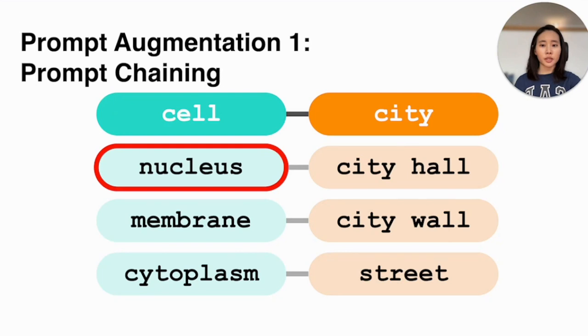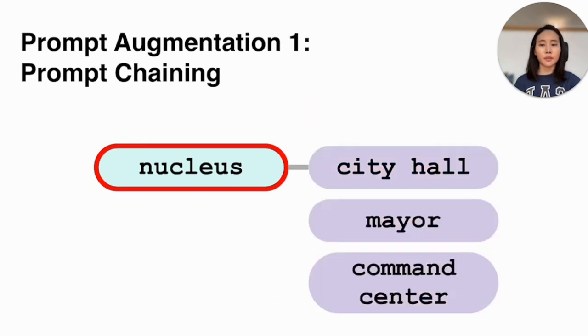The prompt chaining process also supports the iterative process of metaphor creation. For instance, if a user wants to browse alternative sub-metaphors for the nucleus, just a part of the extended metaphor, then all the generation history is fed into the prompt to generate a contextual alternative for the sub-concept.